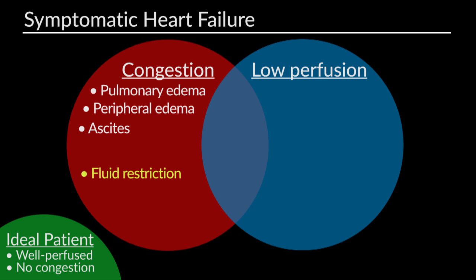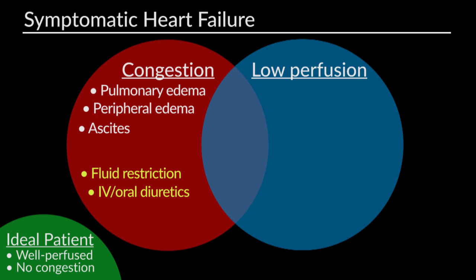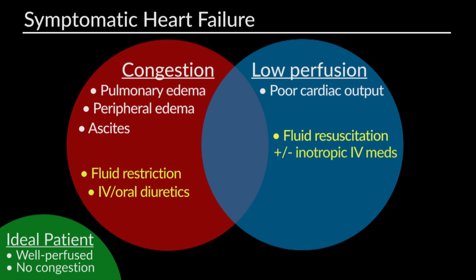Patients with congestion may benefit from non-pharmacological therapies such as fluid restriction, or pharmacological therapies such as intravenous or oral diuretics. Those who present with low perfusion secondary to poor cardiac output — and who are cold and dry — may benefit from fluid resuscitation plus or minus inotropic intravenous medications. Patients with both poor perfusion and congestion may benefit from fluid restriction, diuretic therapy, as well as inotropic medication.